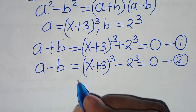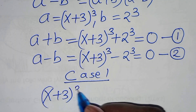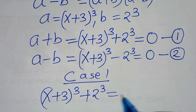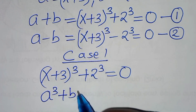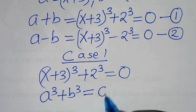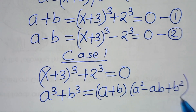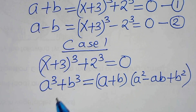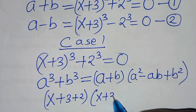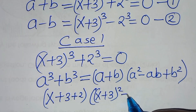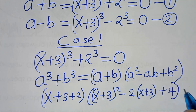Let's solve equation 1, case 1. From case 1, we have x plus 3 raised to the power 3, plus 2 to the power 3, this is equal to 0. This equation is in the form of a cubed plus b cubed, the sum of two cubes, which we can express as (a plus b)(a squared minus ab plus b squared). Applying this property, we have (x plus 3 plus 2) times (x plus 3 raised to the power 2, subtract 2 times x plus 3, plus 4), this is equal to 0.